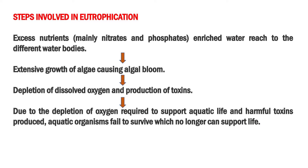Next, we are going to see about the steps involved in eutrophication. First, excess nutrients enter the water and reach different water bodies. Second, excessive growth of algae, causing algal blooms. Third, depletion of dissolved oxygen and production of toxins.